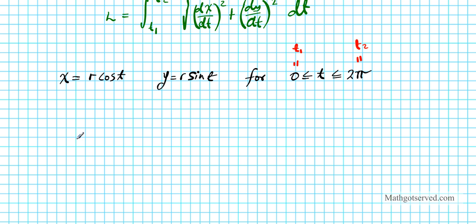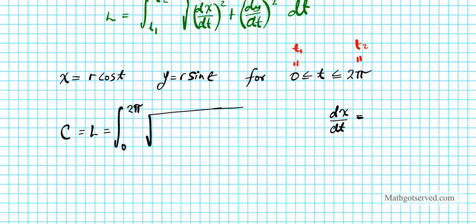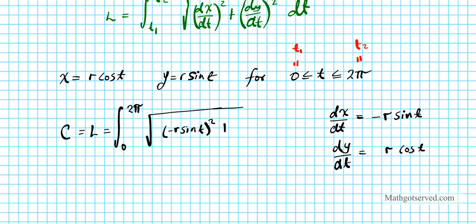The arc length L is actually the circumference of the circle in this case. Let's compute dx/dt and dy/dt on the side. dx/dt is the derivative of r cosine t with respect to t, which gives negative r sine t. And dy/dt is the derivative of r sine t with respect to t; since r is a constant and the derivative of sine is cosine, we get r cosine t. Now I'll input these into our integral: the integrand under the square root is (negative r sine t) squared plus (r cosine t) squared.